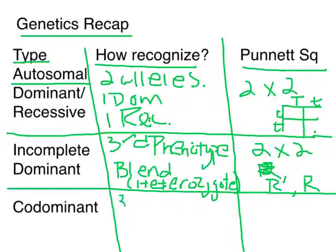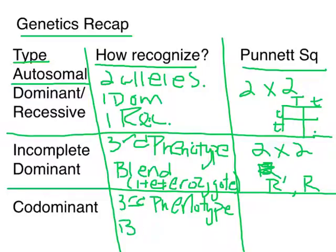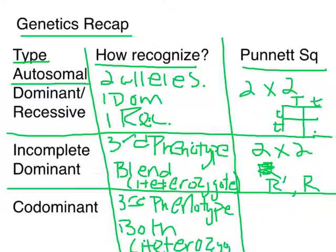Codominance also has a third phenotype. This time, instead of the blend, you see both phenotypes in the heterozygote. You still have the two by two Punnett Square, this time with B and B prime, but now you've got your black chickens and your white chickens — or your checkerboard chickens — where you see both side by side.